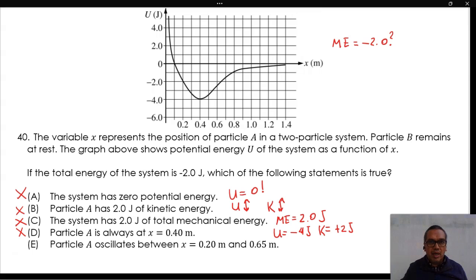Particle A oscillates between x equals 0.20 meters and 0.65 meters because whenever particle A reaches those positions, the potential energy becomes negative 2 joules, making the kinetic energy zero.